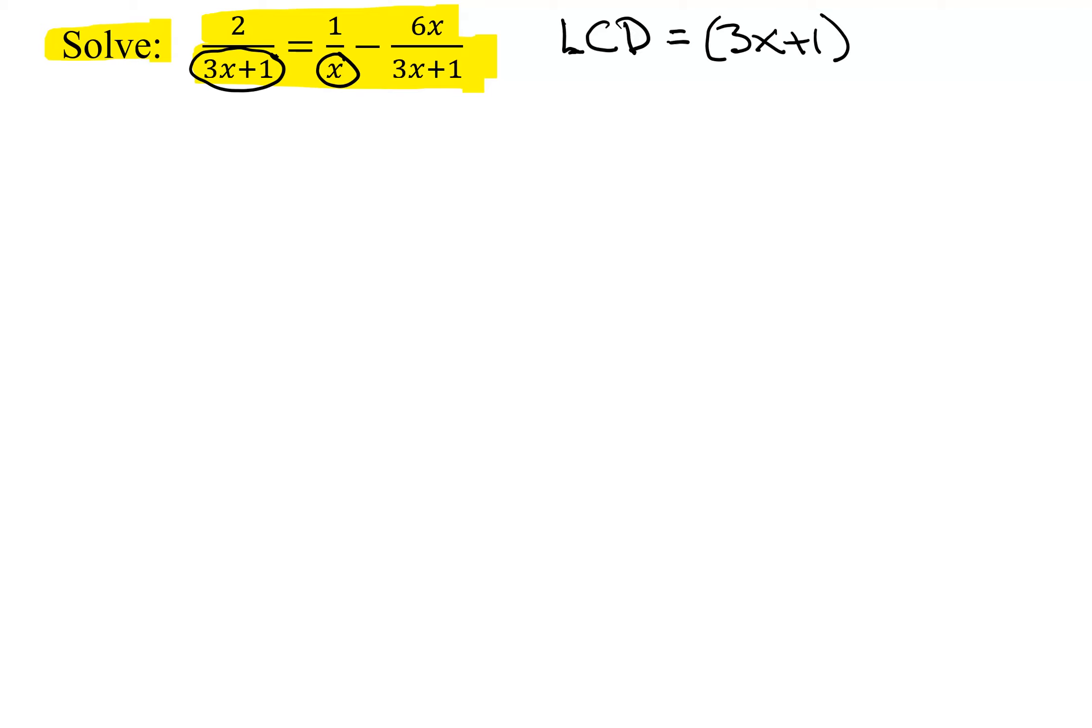And go to the third one. Do I already have my 3x plus 1? Yes. So what is my LCD? It's the quantity x times 3x plus 1.